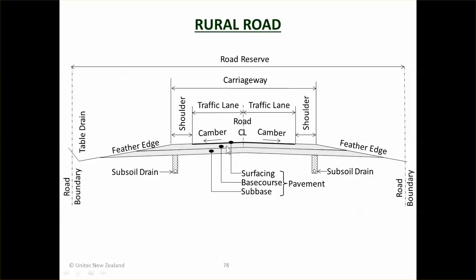A rural road is much the same design — it's got a sealed road pavement on a subgrade — but oftentimes they don't have that kerb and channel constraining the base course. They feather the edge, allowing trucks and cars to actually pull over to the side, and then there's a table drain collecting the water and transporting it to the nearest water course.